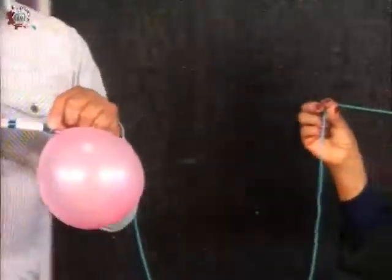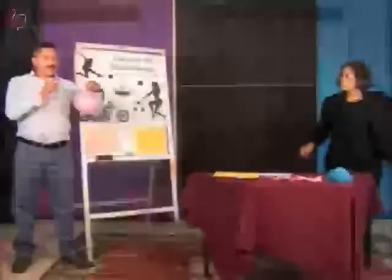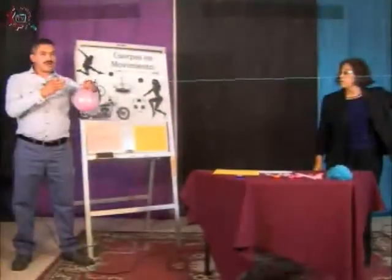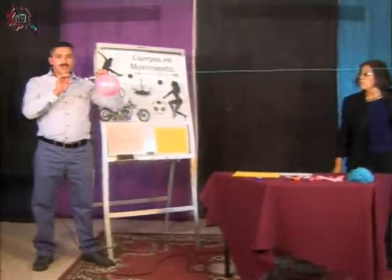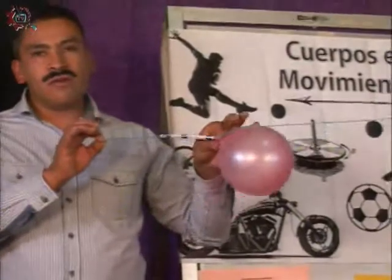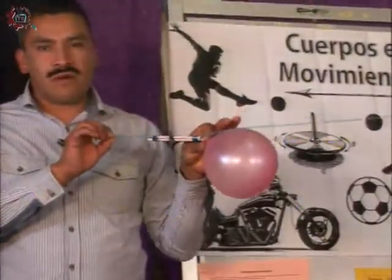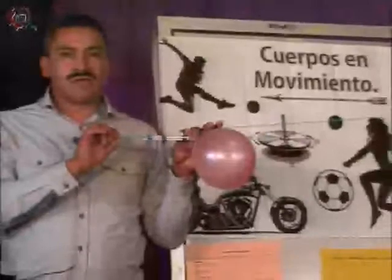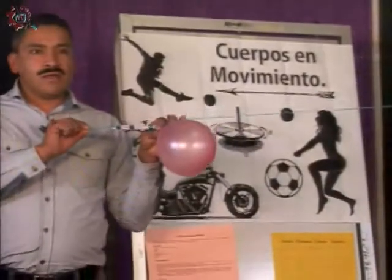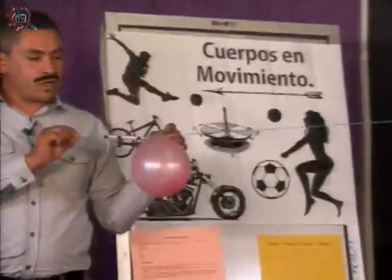Una vez que tengamos listo nuestro modelo, procedemos a estirar la cuerda, el hilo, el estambre, y ya con el globo lleno de aire lo soltaremos. Aquí nosotros ya lo tenemos amarrado para que ustedes vean el efecto. La incógnita es si lo lograrán en la mejor medida con alguno de los tres modelos.